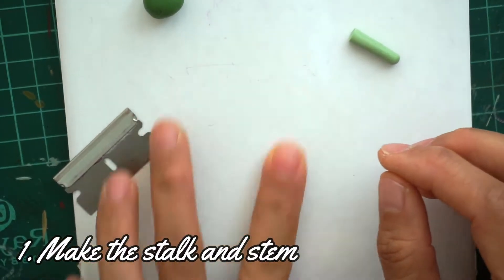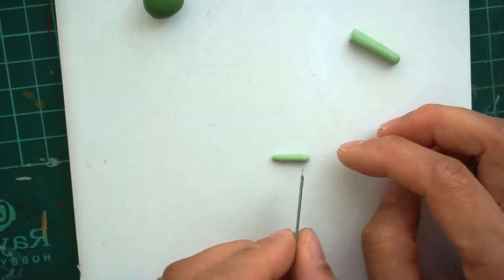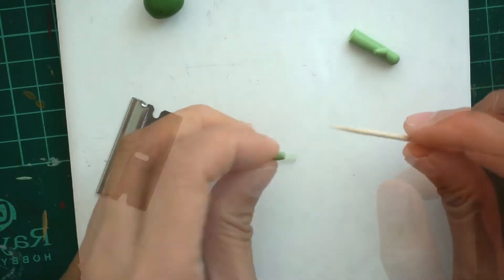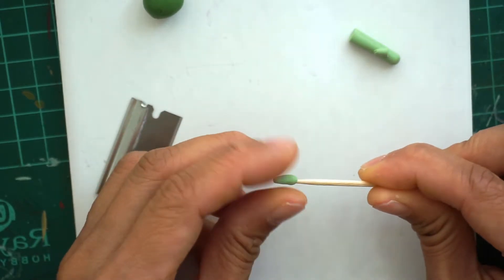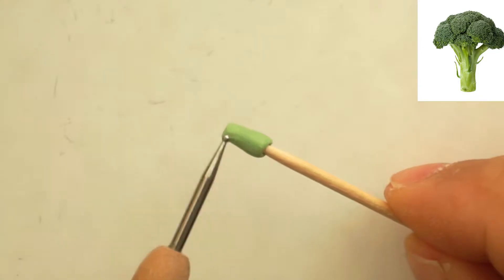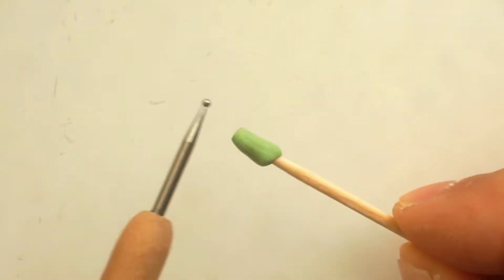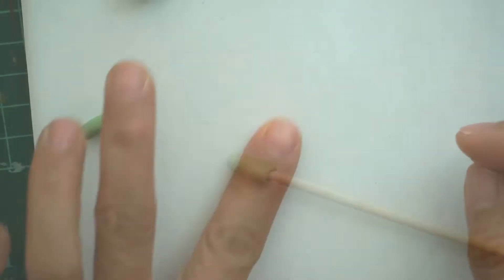Let's start making the stalk and stem. Roll the light green clay to a snake and then slice it between 8 to 10 millimeters long. Use a cocktail stick to hold the stock - this will be much easier to shape the stock and also add the stems. Use a dotting tool to create a vertical line around the stock.